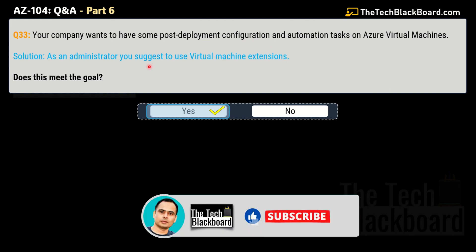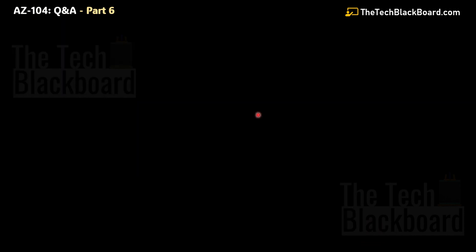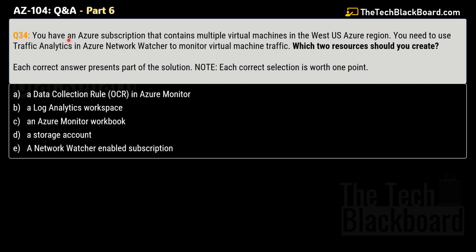If you're liking the video, please give it a thumbs up. Question number 34: you have an Azure subscription with multiple virtual machines in the West US region. You need to use traffic analytics in Azure Network Watcher to monitor VM traffic. Which two resources should you create? Options: A) A data collection rule in Azure Monitor, B) A log analytics workspace, C) An Azure Monitor workbook, D) A storage account, E) A Network Watcher-enabled subscription.